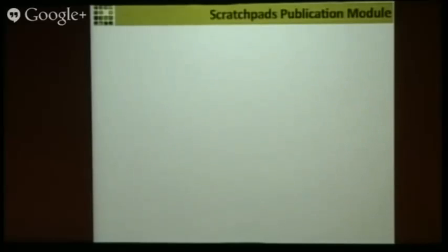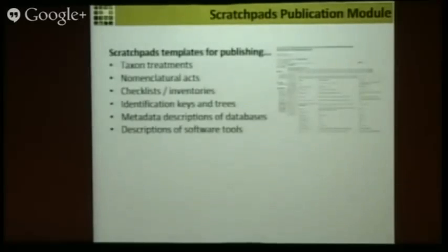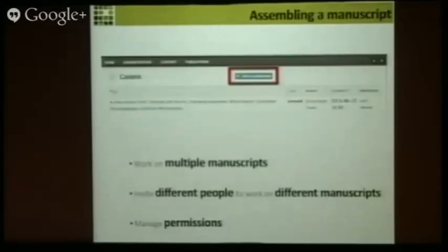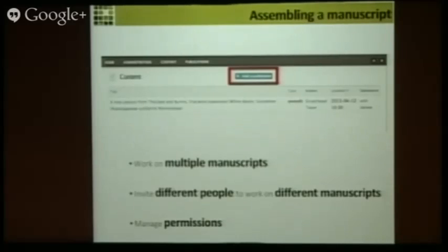How do Scratchpads and the BDJ interact? We provide a number of templates through Scratchpads that allow you to select your data and directly send it for publication, generating a manuscript to be published through a very easy and intuitive interface. You can start a new manuscript by just clicking on the publication module, work on multiple manuscripts at once, invite different people to participate, and assign different roles and manage permissions on the manuscript.